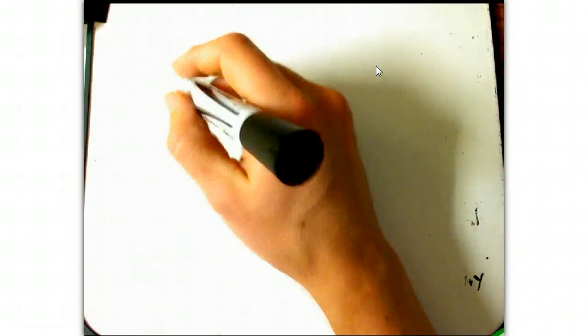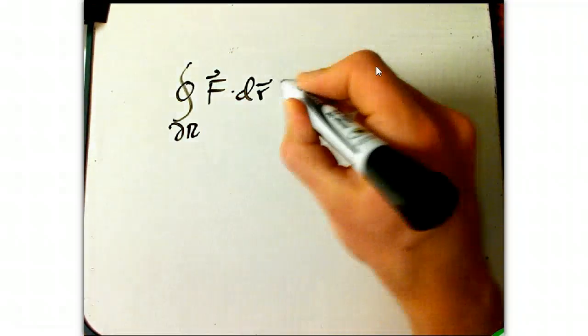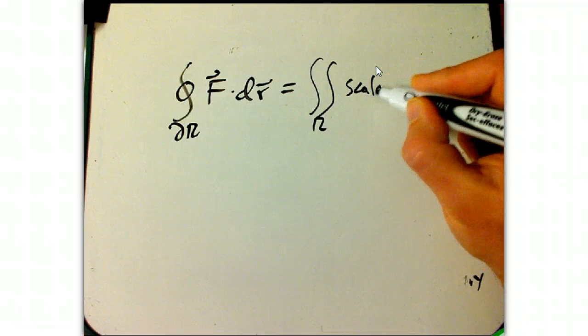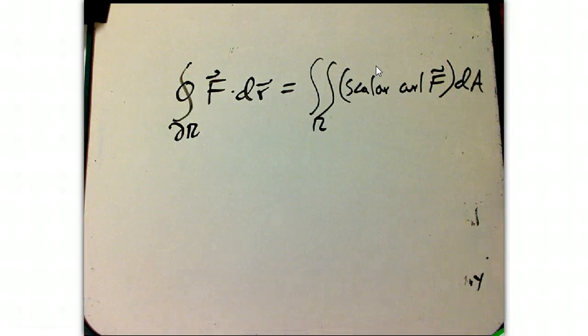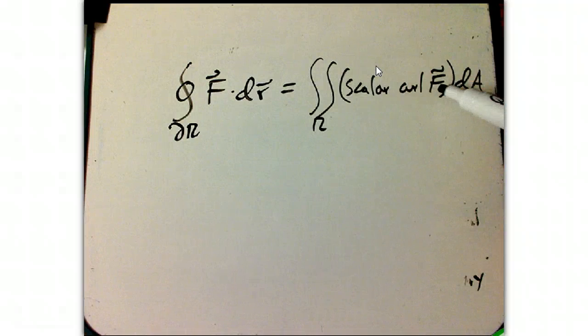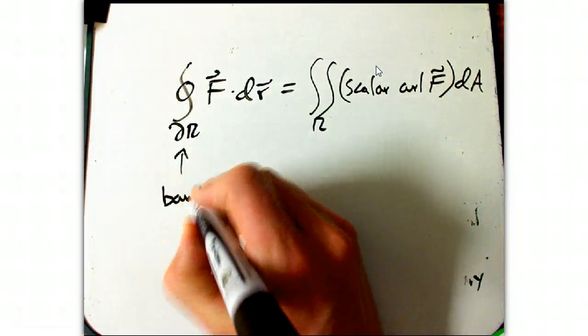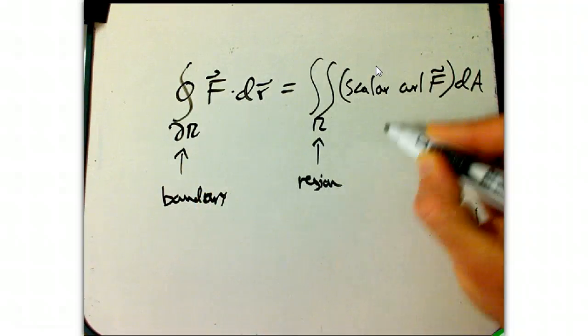In sum, we have Green's Theorem, which says that the circulation around the boundary of a region of a vector field is the integral of, and I'm going to write out scalar curl, because it's really, really, really nice that scalar curl has this explicit expression in terms of partial derivatives, but what I'm focusing on right now is just that it's some kind of derivative of f. And so integral over a boundary is the integral over the original region, but of a derivative.